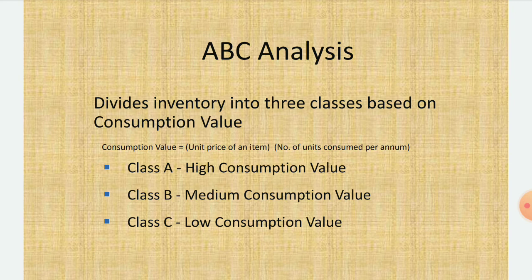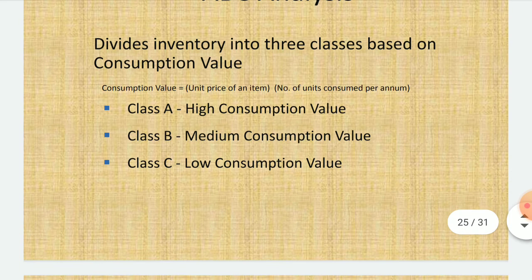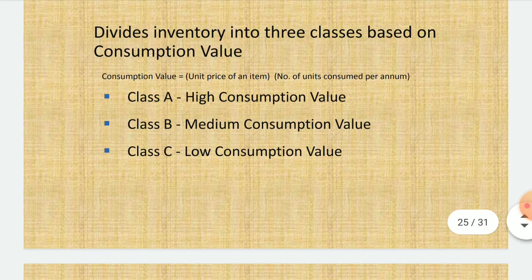Consumption value is the unit price of the item multiplied by the number of units consumed per annum. For example, in a grocery shop, everyday-consumed items have high consumption value, seasonal items have medium consumption value, and rarely purchased items have low consumption value. Items are segregated accordingly: A = high, B = medium, C = low consumption value.